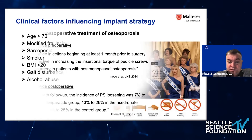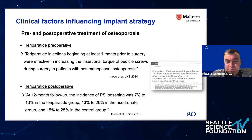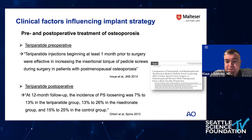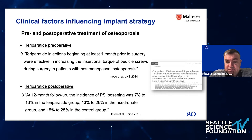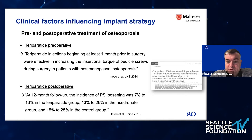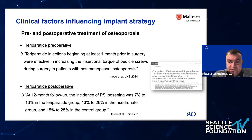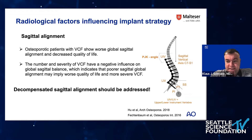Especially when surgery is being considered in an osteoporotic patient — and it is not an emergency — you should think about pre-operative medical treatment. Teriparatide is the agent with the most data: starting at least one month prior to surgery may increase the insertional torque of pedicle screws, and continuing it postoperatively may lower the risk of pedicle screw loosening. Romosozumab is probably similar but we don't have sufficient data yet.